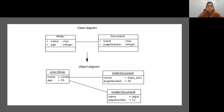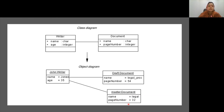Here is an example showing an object diagram constructed from a class diagram. The class diagram has Writer and Document classes. The object diagram uses the same rectangle notation but with the object-class name underlined — for example, John:Writer, meaning John is an object of the Writer class. It contains the attribute values: name is Jones and age is 35. Jones has two documents: the first is Draft with name 'legal' and page number 54, and the second is Master with page number 32.